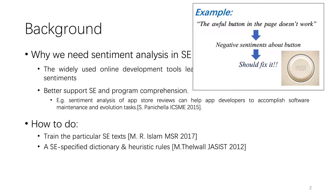At present, there are two remaining methods to customize automatic tools for SE texts. The first is training on particular SE texts. The second is building an SE-specific dictionary and using heuristic rules to assist it. Because the training method needs huge amounts of labeled data and has poor universality, we build our approach based on the dictionary tool, SentiStrengths.